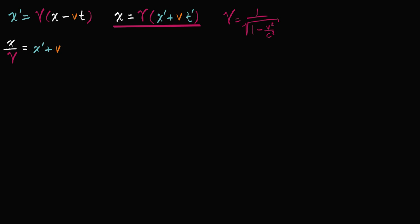Now everything I'm going to do here is pretty straightforward algebra — it's going to get a little hairy, so I want to take some caution and progress slowly. Since I want to solve for t prime, let me subtract x prime from both sides. So the left-hand side is going to be x over gamma minus x prime, and that is equal to v times t prime. Now to solve for t prime, let's just divide both sides by v.